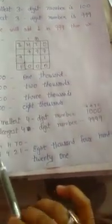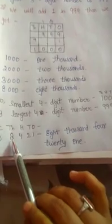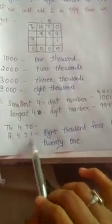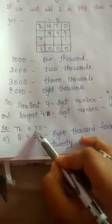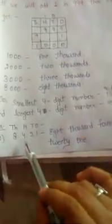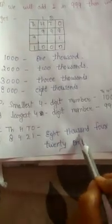So, we can read. Suppose the number given is 8421. First, we will put place values where we read ones, tens, hundreds, thousands. So, how will we read it? Eight thousand four hundred twenty-one. Thank you.